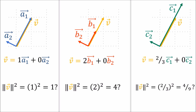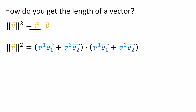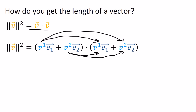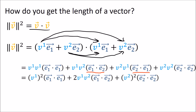It turns out that the real formula for vector length isn't given by Pythagoras — it's given by the dot product. The squared length of the vector v is equal to v dot v. Expanding v out in the old basis, we can distribute this just like a normal algebra expression, grouping the first, outer, inner, and last terms. Simplifying, and using the fact that e1 dot e2 equals e2 dot e1 (since the dot product doesn't care about the order of inputs), we get this formula for the length.